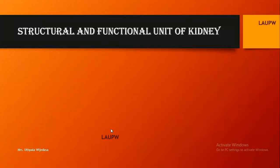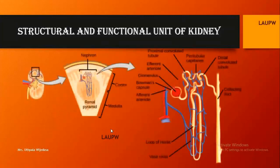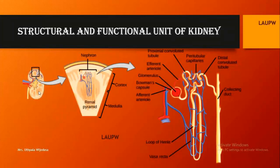There are about one million nephrons in one kidney. This diagram shows the structure of the nephron. Such nephrons are located inside the pyramid areas, and there are several pyramids in one kidney. We will now learn about the structure of a nephron.